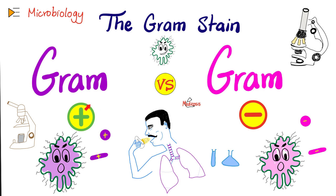Mycobacterium tuberculosis is anatomically gram-positive. We expect it to be gram-positive based on the structure of the cell wall. However, in reality, it does not stain well with gram stain thanks to the mycolic acid. To tell you about the technique of the acid-fast stain, let me first remind you of the gram stain technique. For an elaborate discussion, check out my video called "The Gram-Positive versus the Gram-Negative" in my microbiology playlist.